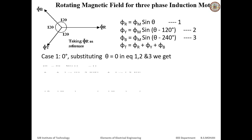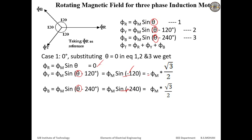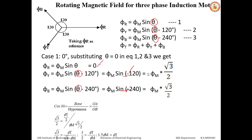Case 1: θ = 0. Substituting θ = 0 in the three equations, we get φ_R = 0, sin(−120°) = −√3/2, and sin(−240°) = +√3/2. Therefore, φ_R = 0, φ_Y = −φ_M√3/2, and φ_B = +φ_M√3/2.